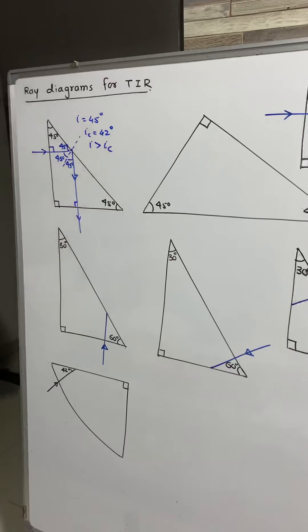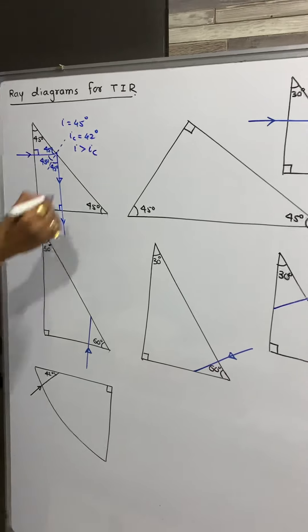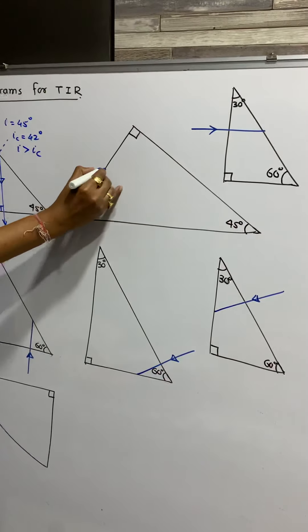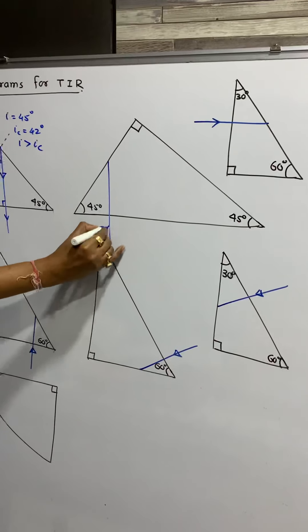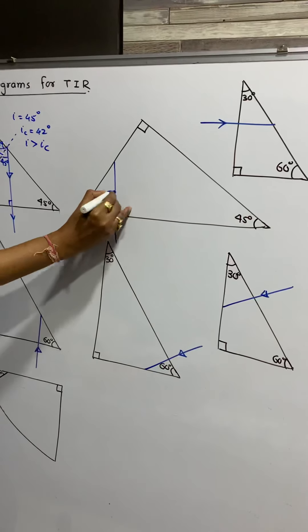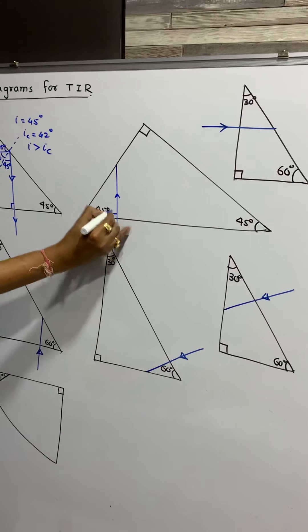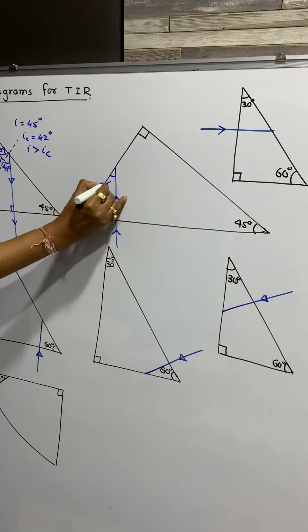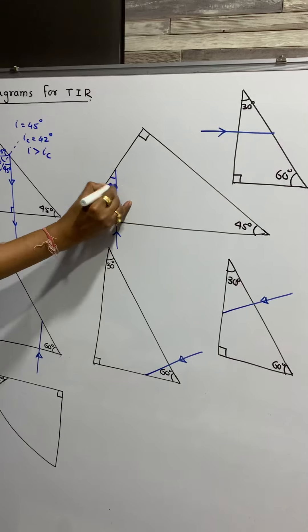Similarly, one more ray. Now we are to turn light by 180 degrees. This is my incident ray, incident like this. This is 90, this is 45 — obviously this is also 45 degrees.